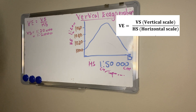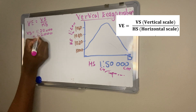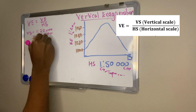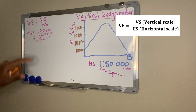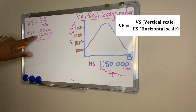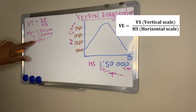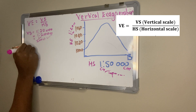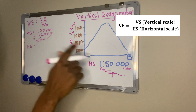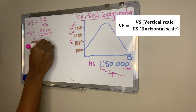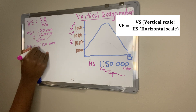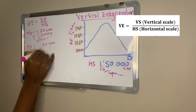Our vertical scale as a fraction is 1 over 2,000 — that is now in centimeters, and that's your first mark. For the horizontal scale, we know it is 1 to 50,000, and it is already in centimeters, so all we have to do is write it as a fraction: one over fifty thousand.